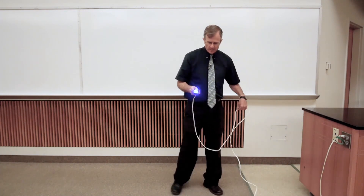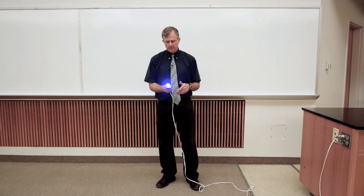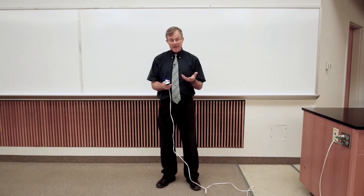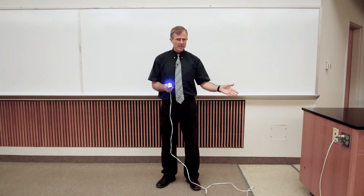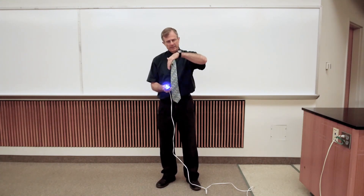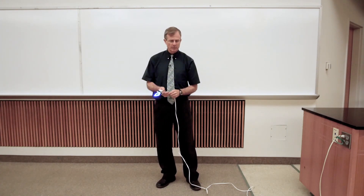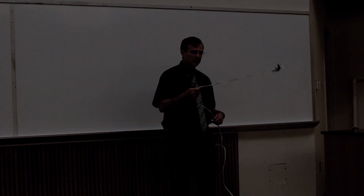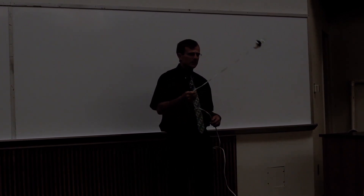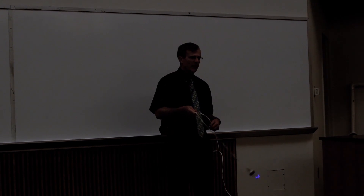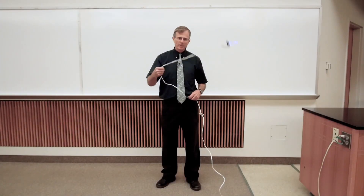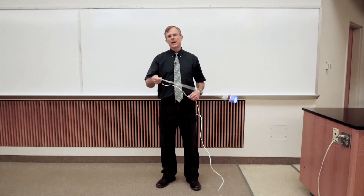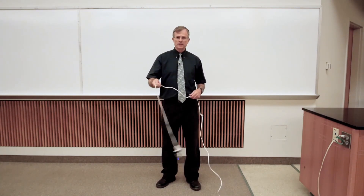If we spin this wire around, you'll be able to see that there are flashes of light. Those flashes occur when the AC alternating current is positive, and then it goes dim when the AC is negative, when the voltage is negative. You should be able to see flashes of light as this goes around in a circle.